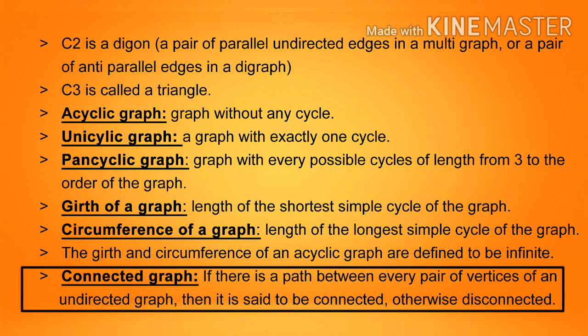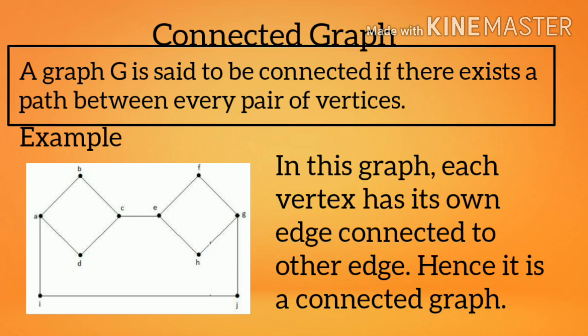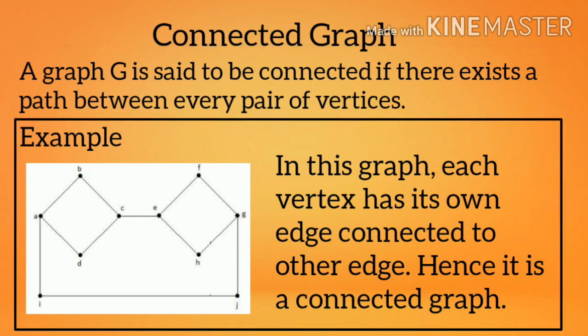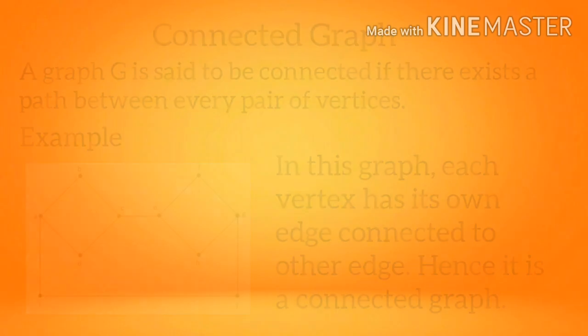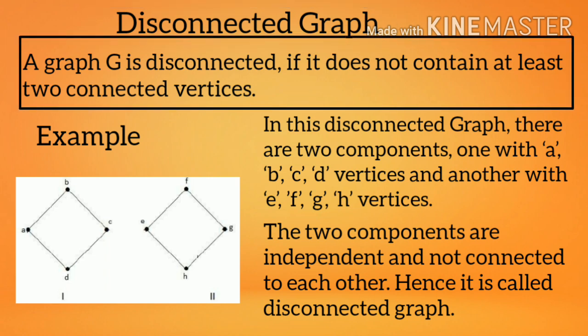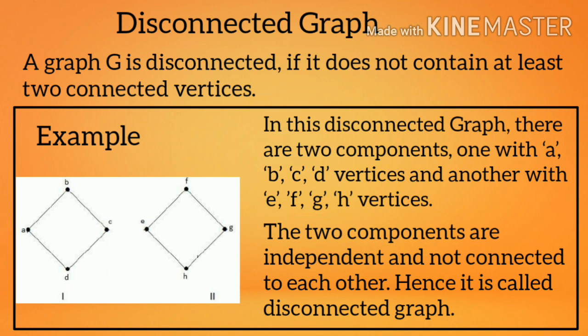Connected graph: if there is a path between every pair of vertices of an undirected graph, it is said to be connected; otherwise disconnected. Each vertex in a connected graph has its own edge connected to other vertices. Disconnected graph: a graph G is disconnected if it does not contain a path between at least one pair of vertices. In a disconnected graph there may be two components — for example, one with vertices ABCD and another with vertices EFGH — independent and not connected to each other.